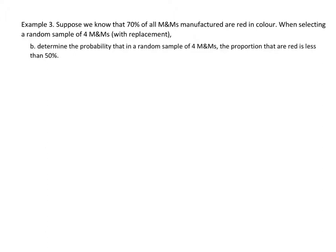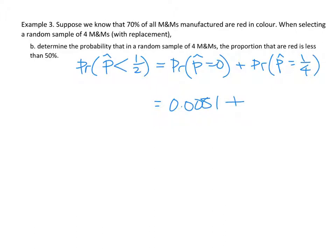So now you're doing part B, where you're asked to find the proportion that a red is less than 50%. So what that means is you want the probability that p hat is less than a half, which is the probability that p hat equals 0 plus the probability that p hat equals a quarter. So from your previous tables, you had 0.0081 plus 0.0756, which equals 0.0837.